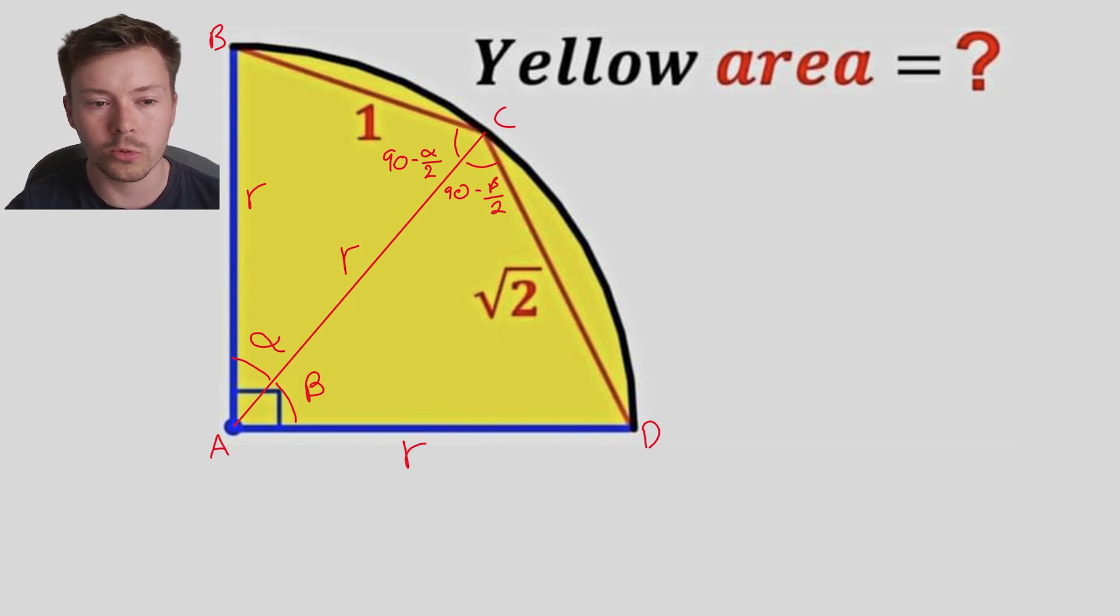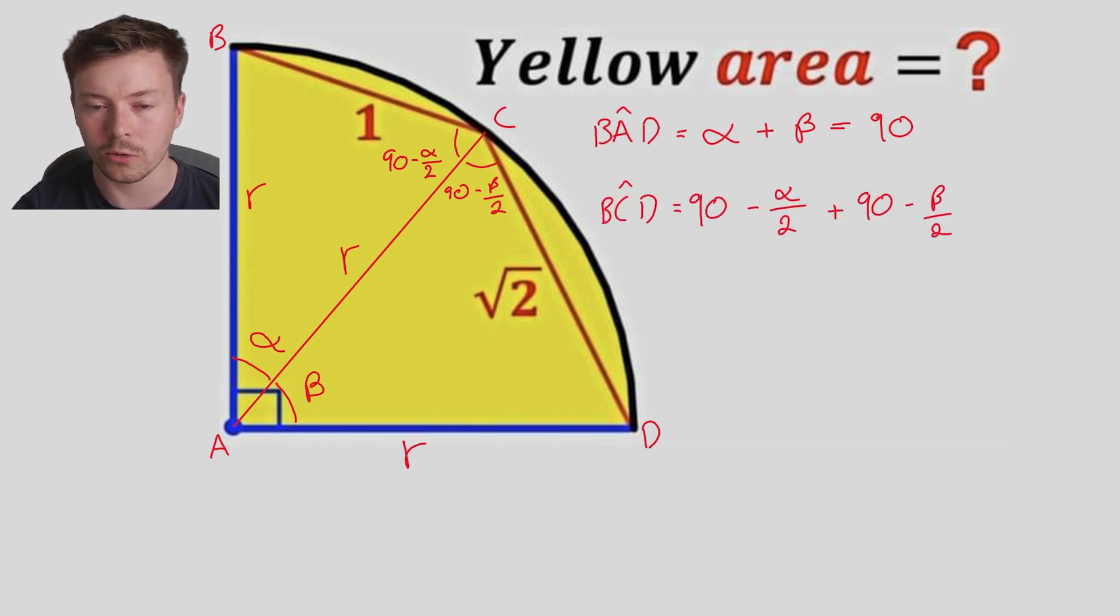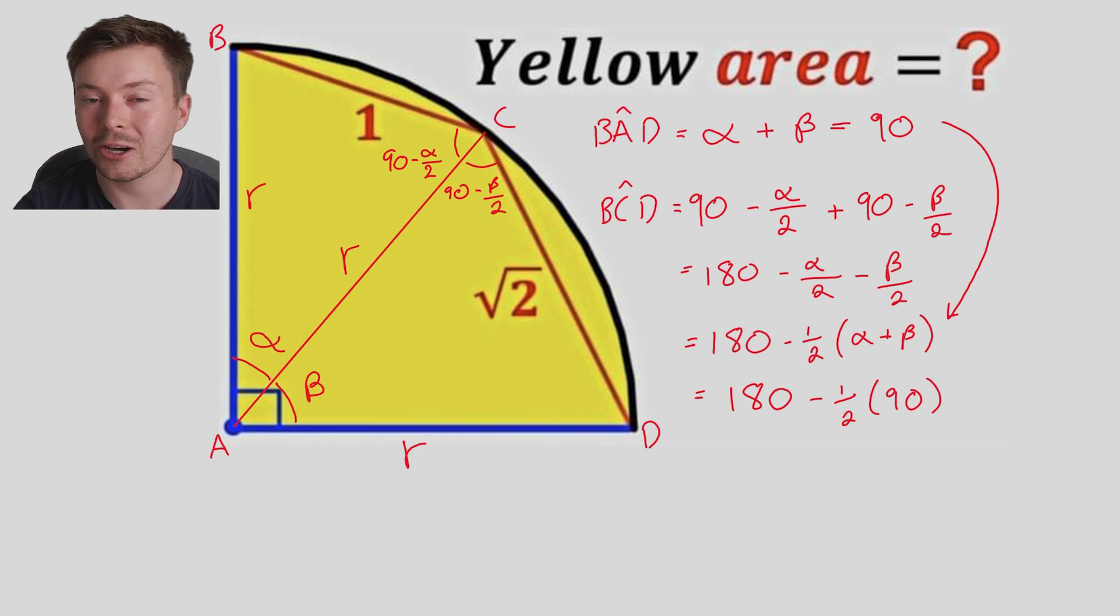Now I want to work out what those two angles are combined, but what I do know first of all is that the angle BAD is equal to alpha plus beta, which is equal to 90 because of the right angle. So angle BCD is 90 minus alpha over 2 plus 90 minus beta over 2. If I simplify that, I get 180 minus alpha over 2 minus beta over 2, and you might see that I can factorize this to 180 minus a half brackets alpha plus beta. I can substitute the first equation into that, so where I see alpha plus beta, I change that to 90. Substituting, 90 minus a half of 90, half of 90 is 45, 180 take away 45 is 135.